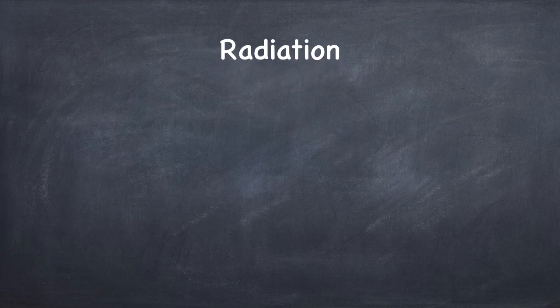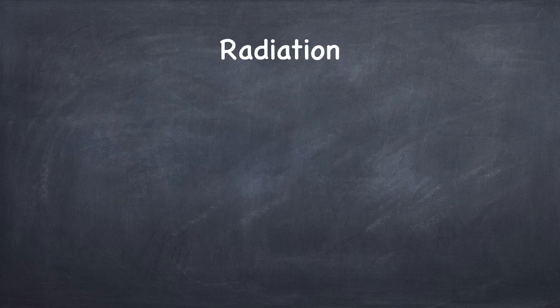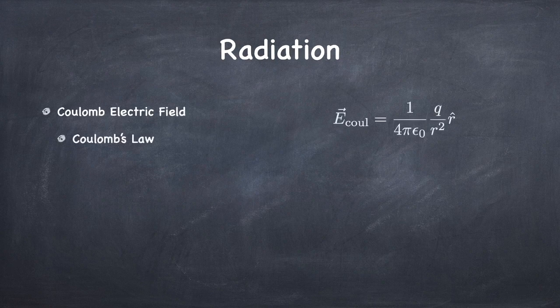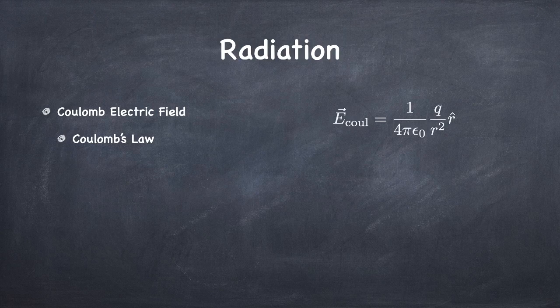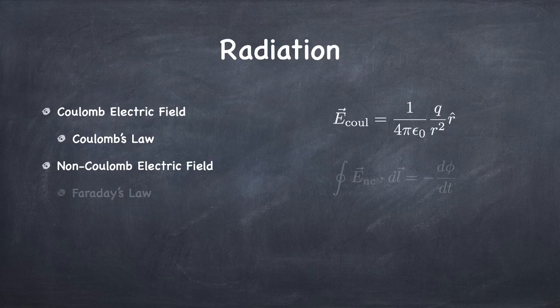I want to remind you that we've already encountered two different types of electric fields, or two different ways of producing electric fields. There's the Coulomb field — you have some bare charge, it produces a field given by Coulomb's law. The second way we just learned last week, and that is through Faraday's law: the non-Coulomb curly electric fields, given by the integral of the non-Coulomb field around a loop equals the rate of change of the magnetic flux through that loop.